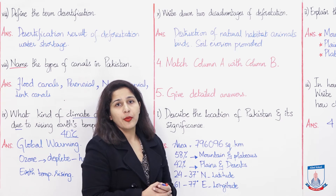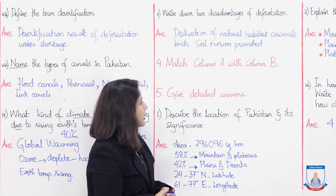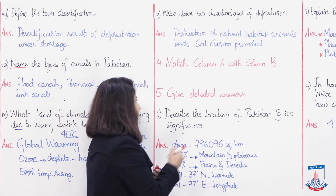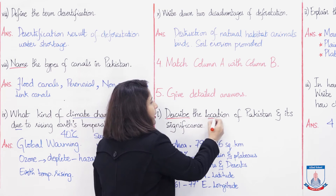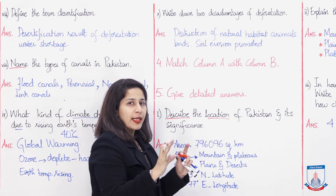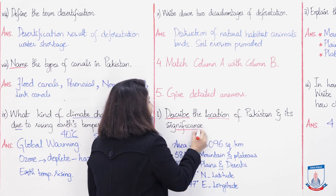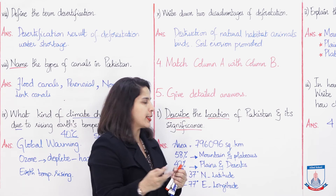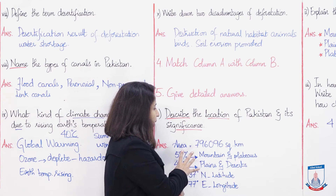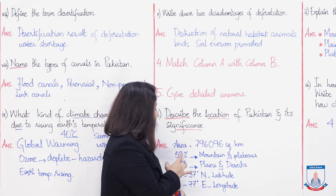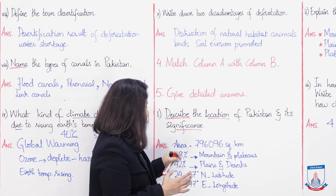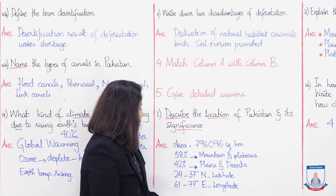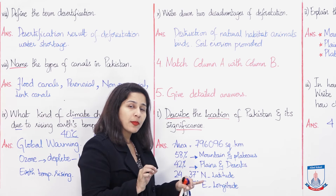The fifth part starts with detailed answers. Describe the location of Pakistan and its significance. The key term here is 'describe the location' — you have to fully explain the location of Pakistan and its importance. When explaining Pakistan's location, discuss major points like Pakistan's area, which is 796,096 square kilometers, and that its land comprises 58 percent mountains and plateaus and 42 percent plains and deserts.